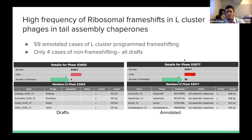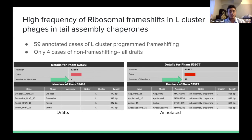The first sign that we had a ribosomal frameshift was when we looked at family members to see how common frameshifting is in L-cluster phages. On the left, the non-frameshifting gene has only four members and they're all drafts, meaning they haven't been annotated. On the right, the frameshifting version has 59 members. So more than likely, our gene undergoes frameshifting, which means we probably have a ribosomal frameshift in Enceladus.